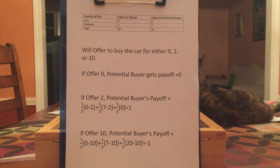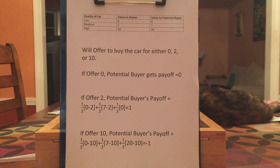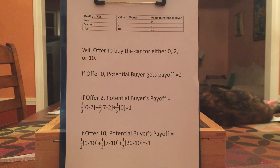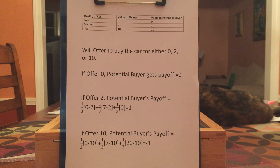You can imagine that in this simple game the parties couldn't talk, but if they could, and the car is of high quality, the owner could say: look, the car is worth ten to me and twenty to you — why don't we trade it for fifteen? We'd both be much better off. Unfortunately, the potential buyer will say: if I knew it was of high quality I'd definitely be willing to pay fifteen, but I don't believe you. If the car was of low or medium quality, it's in your interest to lie and tell me it's of high quality so I pay fifteen. So if you have something of exceptionally high value but you can't prove it, you're stuck — it's very hard to trade it, because chances are other people won't believe you and they're not willing to pay the price that compensates you.